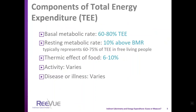Components of total energy expenditure include basal metabolic rate, which is about 60–80% of total energy expenditure. Resting metabolic rate is approximately 10% above basal metabolic rate and represents 60–75% of total energy expenditure in free-living people. Added to that is the thermic effect of food, an increase of about 6–10% above resting metabolic rate. Then the last two — activity and/or disease or illness — vary.